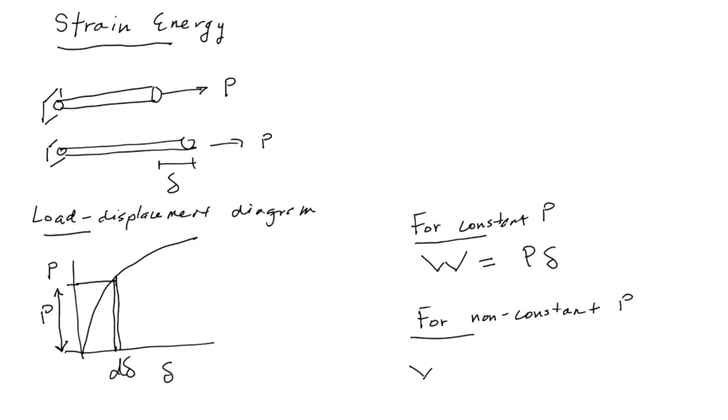For a non-constant P, the work still is P times Delta, but you have to do a different kind of summation. You take the integral from zero to Delta, where Delta is the total elongation, and then you multiply P times d-Delta. So you're looking to add up all the little increments of Delta times the force to get the work. And this here, when we say work, what we mean is external work. That's the work done by the external load P.